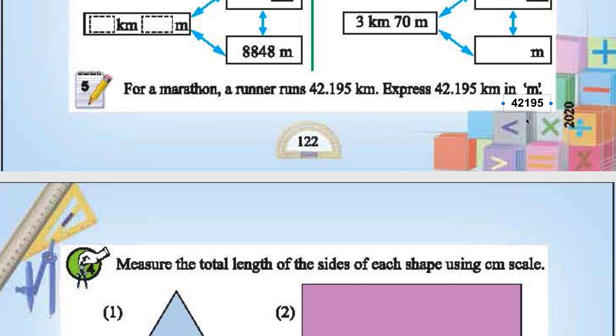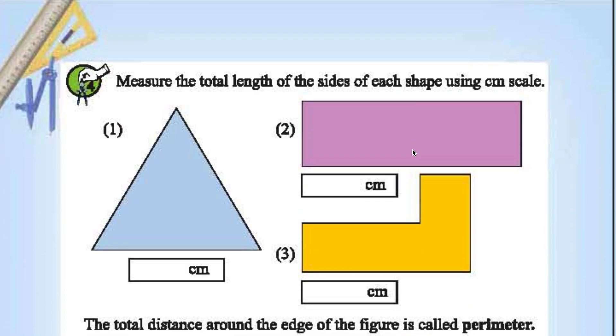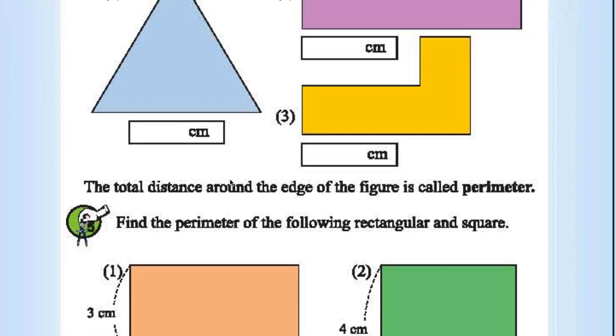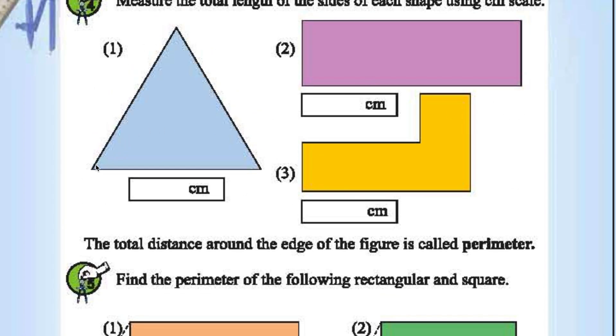Measure the total length of each side using centimeter scale. That you have to do. Total distance around the edge of the figure is called perimeter. Perimeter is total distance around the edge. This is perimeter for this figure, for this figure. Around the ribs, this is perimeter.